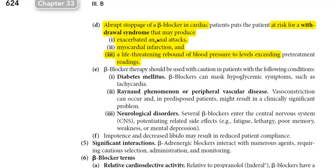Abrupt stoppage of a beta blocker in cardiac patients puts them at risk of withdrawal syndrome including angina, myocardial infarction, and life-threatening rebound hypertension. When a beta blocker is given, the body compensates by upregulating beta receptors. If the drug is suddenly stopped, these excess receptors are activated by norepinephrine, causing severe vasoconstriction, increased cardiac output, and life-threatening hypertension.